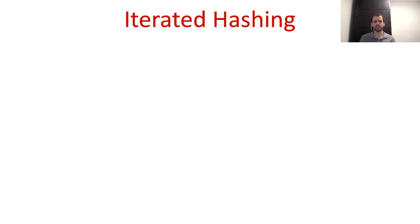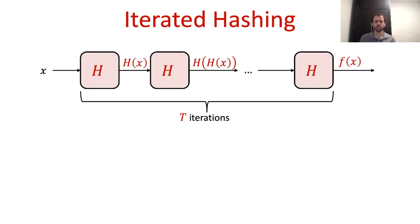Perhaps the simplest example of a delay function is the iterated hashing function. This function is obtained by iteratively applying a cryptographic hash function, such as SHA, onto the input. So if the input is x, we apply the hash function h to obtain h(x), then we apply h again to h(x), and so forth until we have invoked h t times. The output of the delay function is then the output of the last invocation of h.